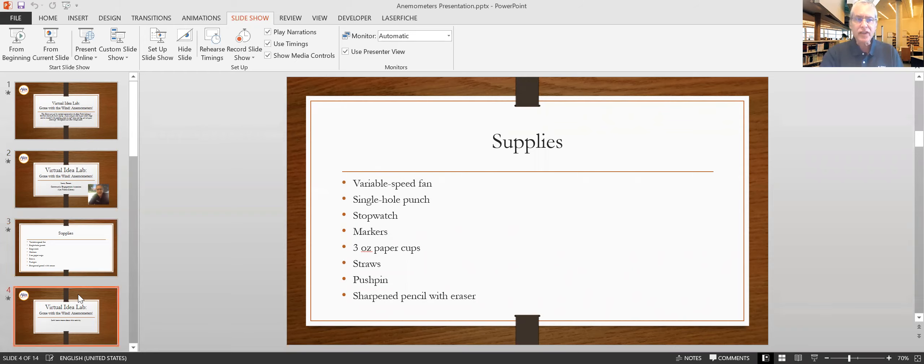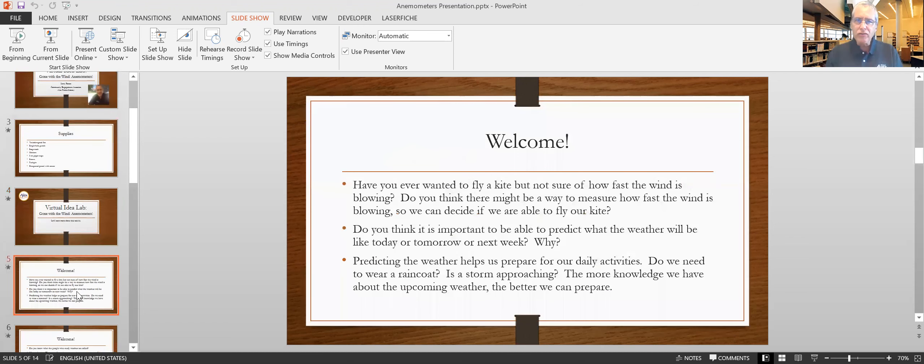Have you ever wanted to fly a kite, but you're not sure how fast the wind is blowing? Do you think there might be a way that you can measure the wind to decide if you want to fly the kite? It might be too windy. Do you think it's important to be able to predict what the weather will be like today or tomorrow or next week? If you can predict what it's going to be like, then you can prepare for upcoming events. Do we have to wear a raincoat? Is a storm approaching? So measuring the wind or other things, it just helps you prepare for upcoming events.